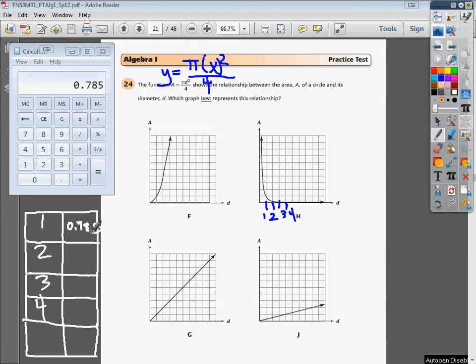For my next one, I'll plug in 2 there. Same type of thing, general idea is the same, except I'm going to do 2 times 2, which is 4. I should clear this out first, right? 4 times 3.14, and then I'll divide that by 4.